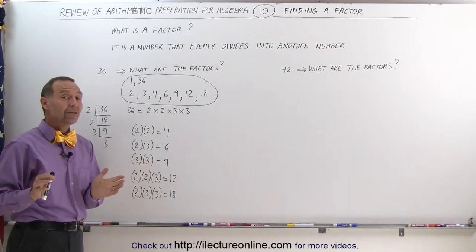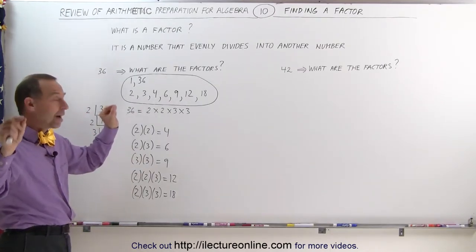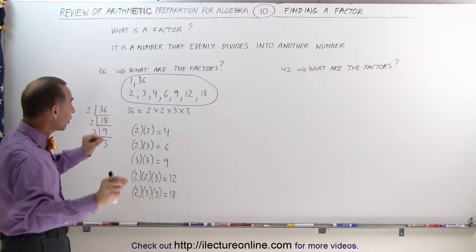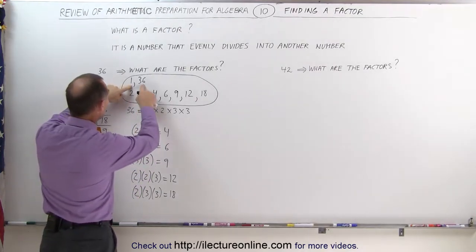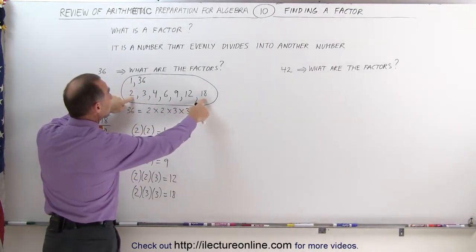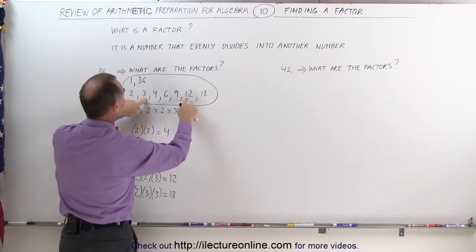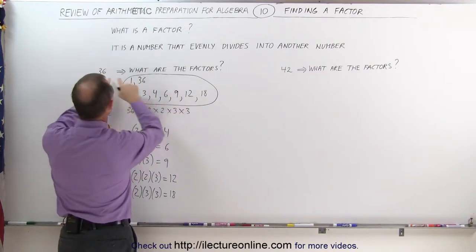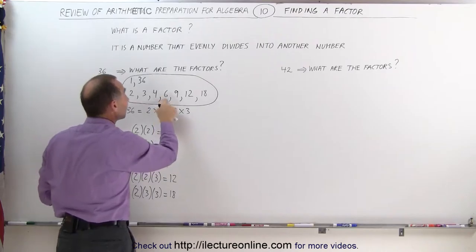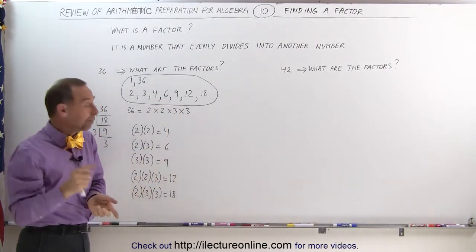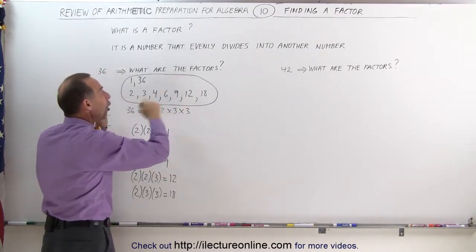Now, a good way to see if you have found all of the factors is to take the outer two numbers, the smallest and largest number, multiply them together to see if you get 36. Which means, 1 times 36 gives you 36. How about 2 and 18? Multiply those two together, 2 times 18, that gives you 36. How about the next two? 3 times 12, that gives you 36. How about the next one? 4 times 9, that gives you 36. And now, since you only have one number left, multiply it by itself, 6 times 6, that also gives you 36. That shows that you found all of the factors.